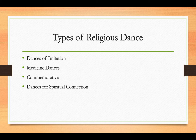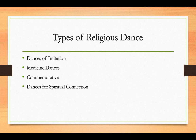In your reading, there are four types of religious dances. I find it easier if I connect the type to the function. There are dances that serve as imitation, dances that serve as medicine, dances that serve as commemorative, and dances that serve as spiritual connection. As you're going along and beginning this process of being a dance historian, think about which function a dance serves. And it's okay if it serves multiple ones, because some of these dances fit into several categories — just be able to explain why you feel like they fit into those categories.